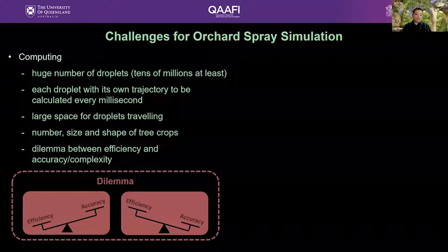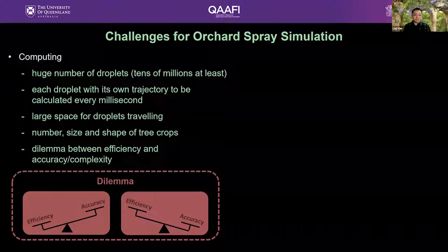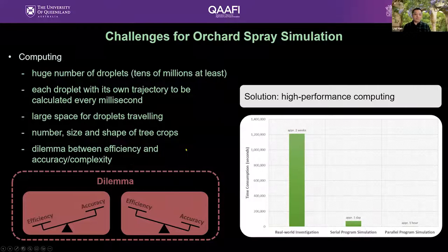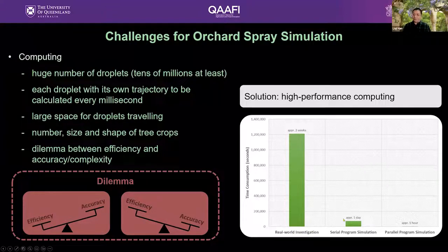The dilemma is between complexity or accuracy and efficiency. If we want better accuracy we may have to sacrifice efficiency, and if we want efficiency we may have to compromise on the level of complexity and accuracy of the simulations — and this is when talking about conventional computing. Our solution is high-performance computing. We have developed a high-performance spray simulator based on digital twins and powered by parallel computing and complex systems. Here is an example comparing times for traditional real-world investigation versus serial programming simulation versus parallel programming simulation.